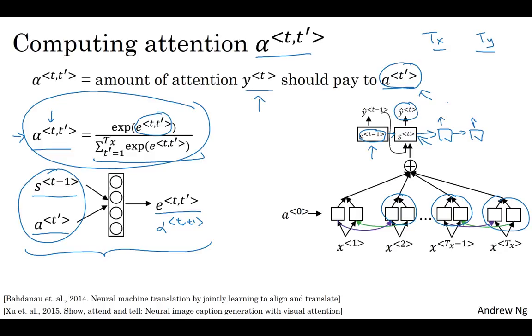So far, I've been describing the attention idea in the context of machine translation. Without going too much into detail, this idea has been applied to other problems as well, such as image captioning. In the image captioning problem, the task is to look at the picture and write a caption for that picture. So in this paper, cited at the bottom, by Kevin Hsu, Jimmy Barr, Ryan Kiroz, Kevin Hsu, Aaron Korver, Russell Sankudunov, Richard Zemmel, and Yosha Banjo, the authors show that you could have a very similar architecture, look at the picture, and pay attention only to parts of the picture at a time while you're writing a caption for a picture. If you're interested, I encourage you to take a look at that paper as well.